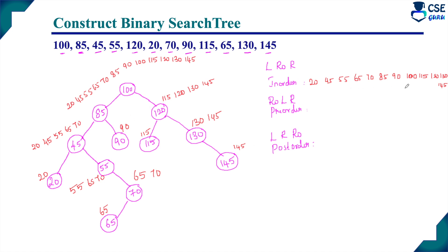If you are considering in-order traversal, the result will be in ascending order — 20, 45, 55, 65, 70... and so on. That is the clue to identify a correct in-order traversal of a binary search tree.